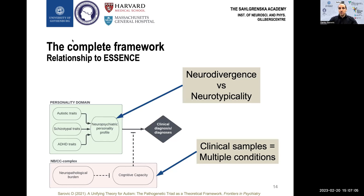We can consider those who have very few of all these traits to be prototypically neurotypical individuals. But because these traits are all normally distributed across the population, it is statistically unlikely for anyone to be prototypically neurotypical by that definition. Also, because clinical samples are more likely to have NBCC complex dysfunction, they are more likely to fulfill diagnostic criteria for multiple disorders. This model illustrates why prototypical neurotypicality is statistically unlikely and why individuals with one diagnosis are much more likely to fulfill criteria for other diagnoses as well.